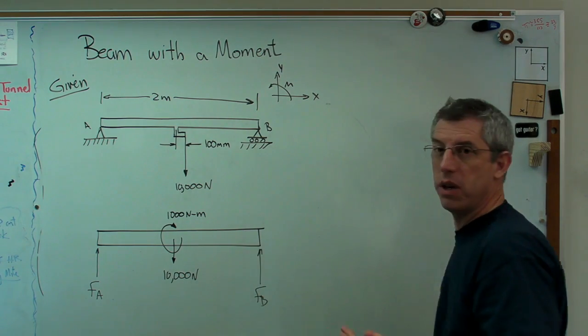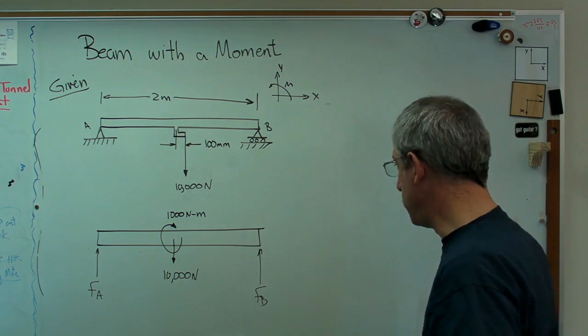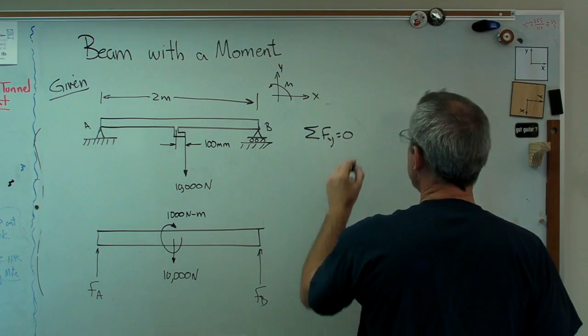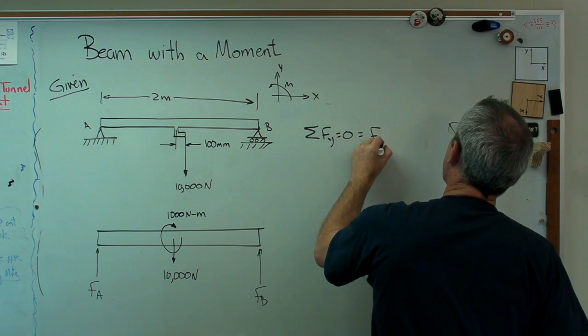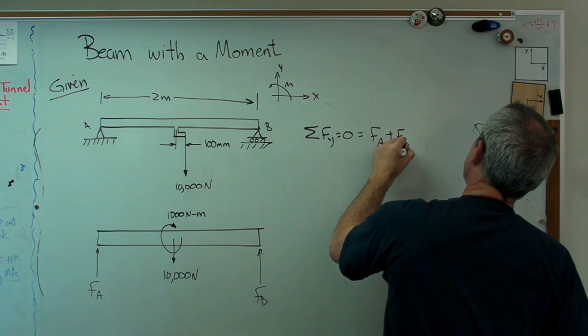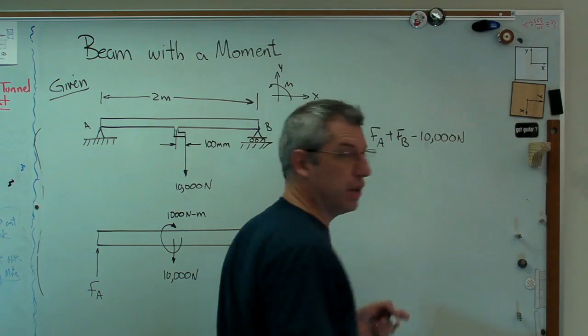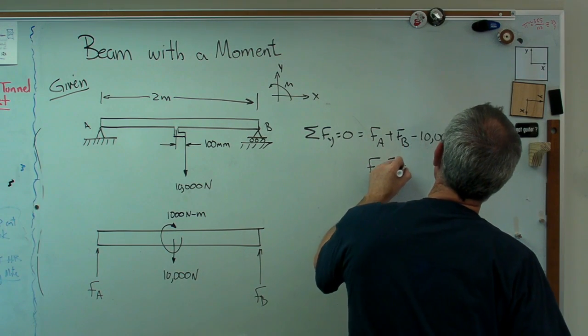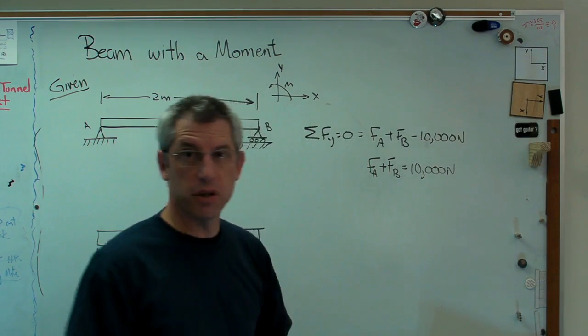There's only two things we can do here. Sum of the forces in the vertical direction equals 0, and sum of the moments equals 0. So sum of the forces in the Y direction equals 0. That means F_A plus F_B minus 10,000 newtons equals 0. Or F_A plus F_B equals 10,000 newtons.